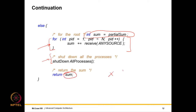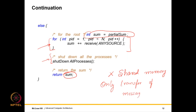For the root process, we initialize the sum with the root's own partial sum. Then for the remaining processes, we run a for loop: as long as we receive a message from any source, we add the integer to sum. Knowing we will receive n minus 1 messages, we run this loop n minus 1 times. After receiving all messages and adding them up, a little bookkeeping shuts down all processes and returns the sum. Only messages have been transferred without a shared virtual address space.